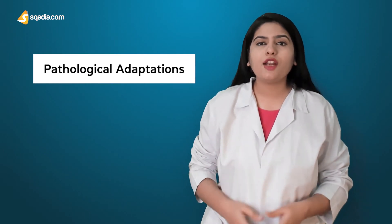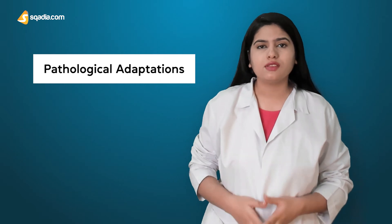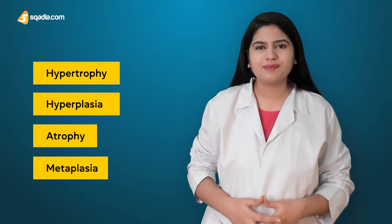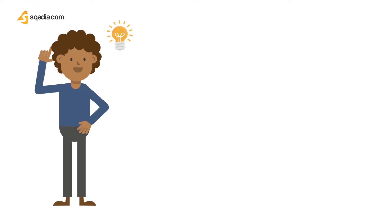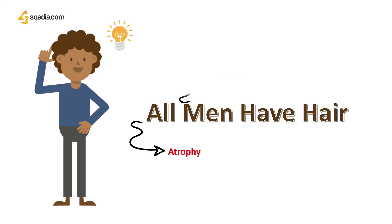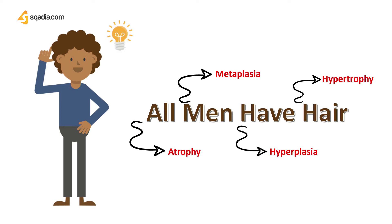Principally, there are four types of adaptations: hypertrophy, hyperplasia, atrophy, and metaplasia. You can remember them by the mnemonic 'all men have hair,' where A is for atrophy, M for metaplasia, H for hyperplasia, and the other H for hypertrophy. These mechanisms can fight against external stress, but only up to a certain limit.